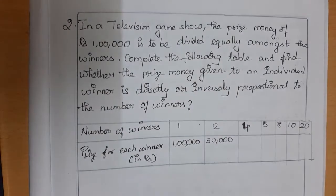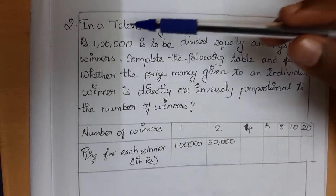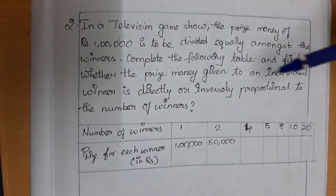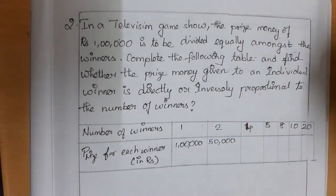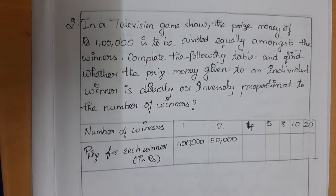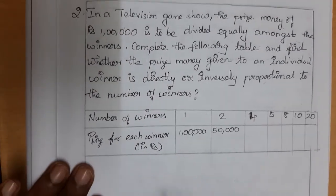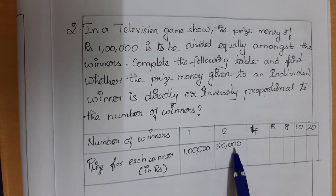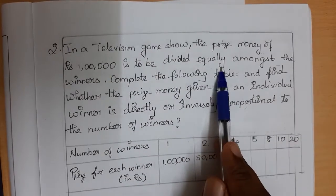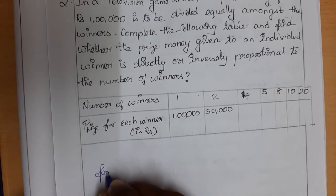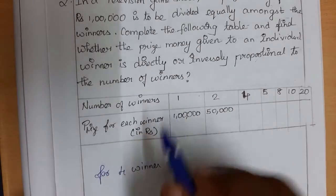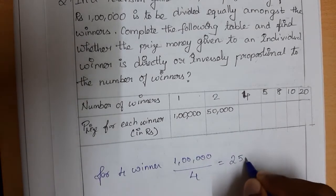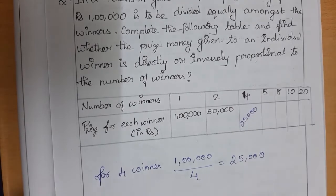Problem: In a TV game show, prize money of Rs. 1 lakh is to be divided equally among winners. We need to complete the table and find whether the prize money per winner is in direct or inverse proportion to the number of winners. For 1 winner: Rs. 1,00,000; for 2 winners: Rs. 50,000 each; for 4 winners: 1,00,000 ÷ 4 = Rs. 25,000 each.